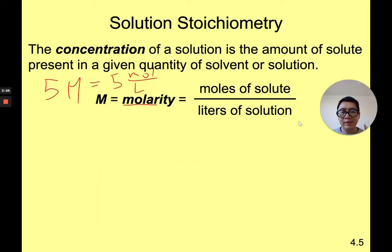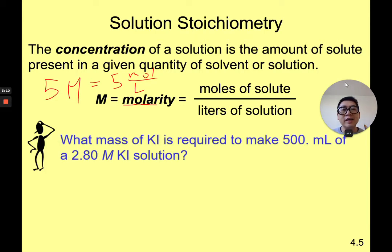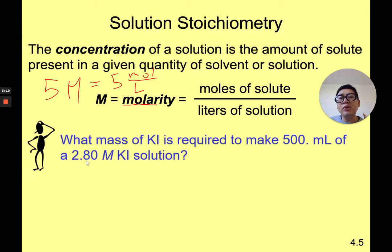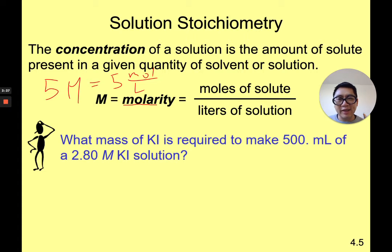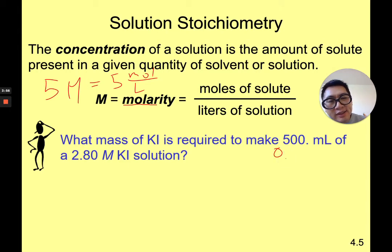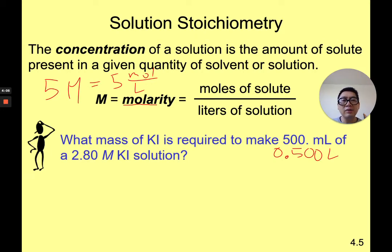Let's look at a sample question: what mass of potassium oxide is required to make 500 milliliters of a 2.8 molar solution? That's the same as 2.8 moles per liter. I know the volume: 500 milliliters, which I'll convert to 0.5 liters. So the question is: what mass of potassium oxide do I need to make half a liter of a 2.8 molar solution?